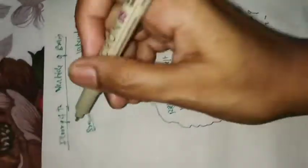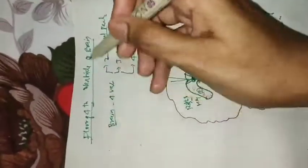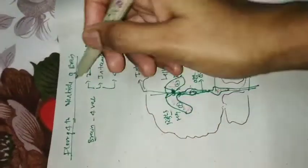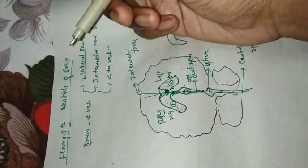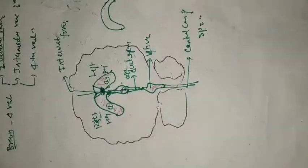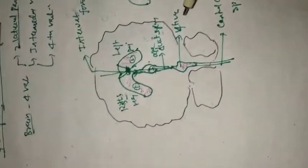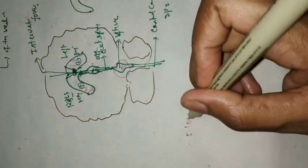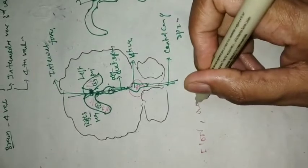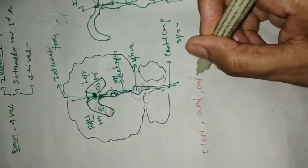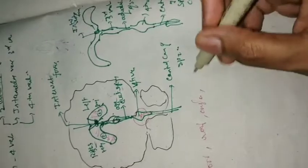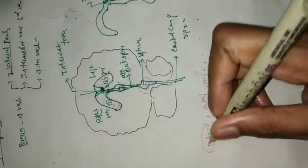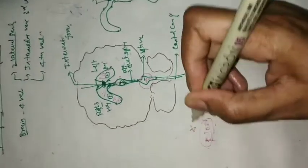So today we are going to study about the floor of the fourth ventricle — what structures are present and how it is formed. Actually, this fourth ventricle has a floor, roof, and angles with many structures. But today we are going to study only about the floor, as for exam purposes it is very very important.